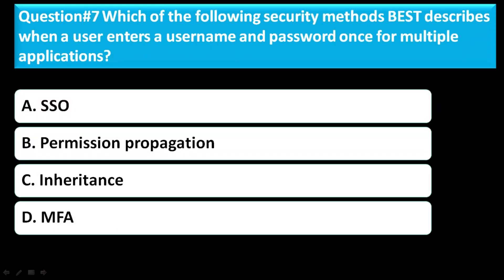Question number 7: Which of the following security methods describes when a user enters a username and password once for multiple applications? Option A is SSO — single sign-on, Option B is permission propagation, Option C is inheritance, Option D is MFA. The correct answer is Option A — SSO, single sign-on.